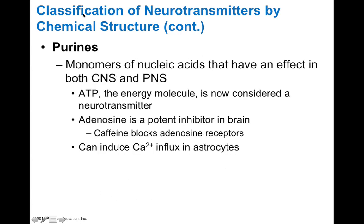The purines are molecules similar to ATP — and in fact even include ATP. ATP is actually used as a neurotransmitter in certain areas, especially in the peripheral nervous system like with your taste buds. Your taste cells use ATP to transmit taste information.